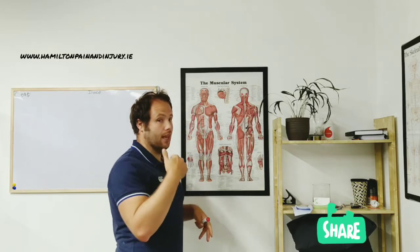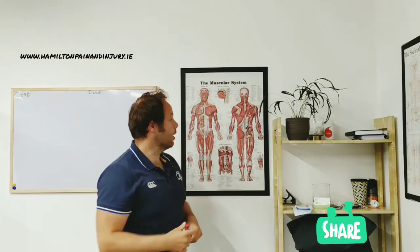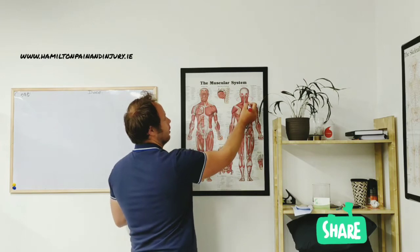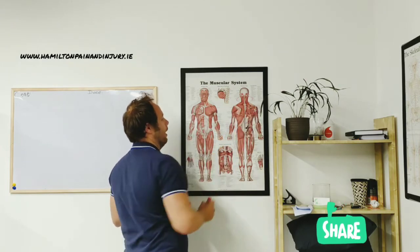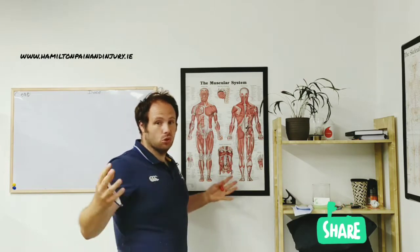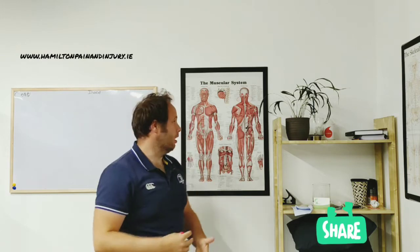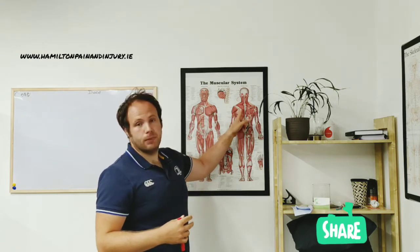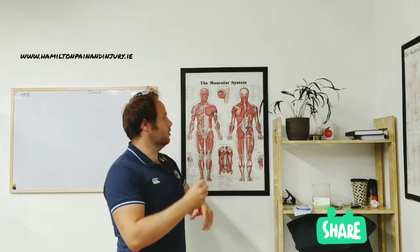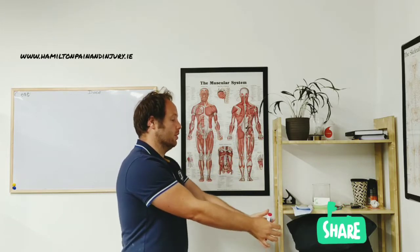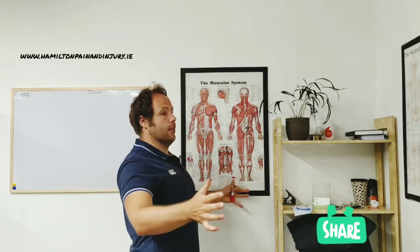Then you have your posterior muscles, your stabilizer muscles like trapezius, mid traps, lower traps, rhomboids and stuff like that and they would keep your shoulders retracted.